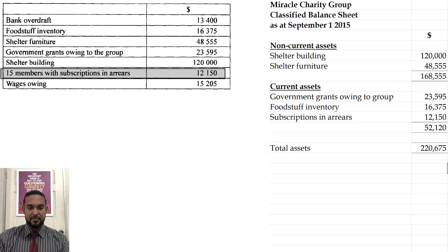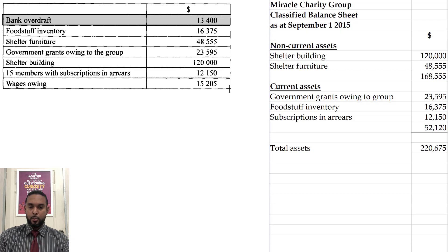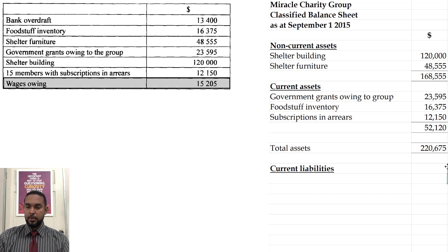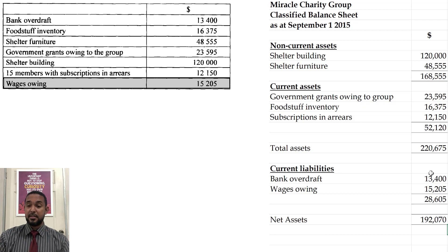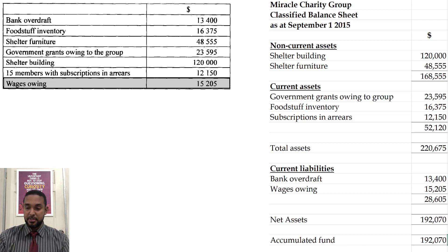We can do a total for assets. Then we have a couple of current liabilities: bank overdraft of $15,400 and wages owing of $15,205, giving us total liabilities of $28,605. We're going to subtract that from $220,675 to get net assets, and that gives us the accumulated fund.